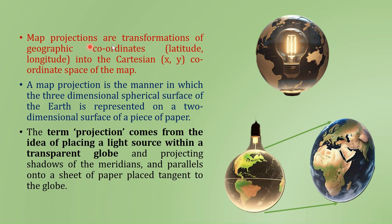So, the map projections are the transformation of geographic coordinates into the Cartesian coordinate space of the map. As we saw in the last video, the latitudes and longitudes are the angular positions on the earth's surface which are measured from the center of the earth. So, the map projection is the manner in which the three-dimensional spherical surface of the earth is represented on a two-dimensional surface of a piece of paper.